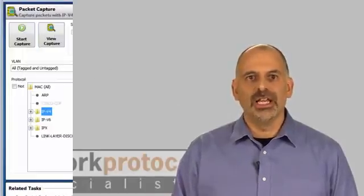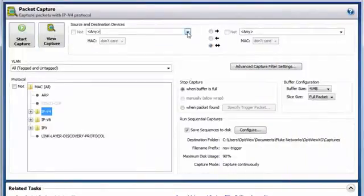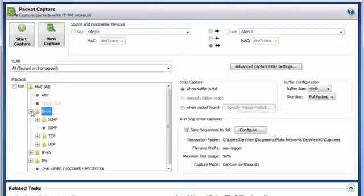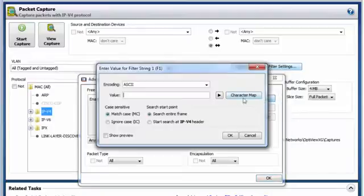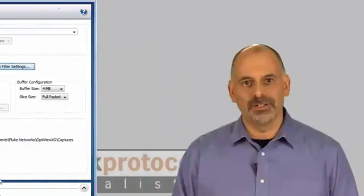With the OptiView XG, not only can I set up filters on protocols and IP addresses, but I can use freestring match filters. These filters enable me to specify a pattern and search for that pattern anywhere in the packet at full line rate. This comes in handy when capturing packets with error messages, such as SQL errors.